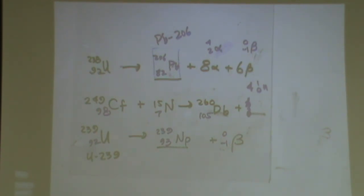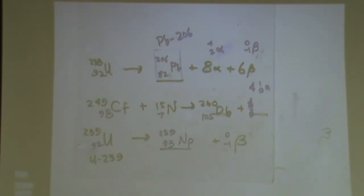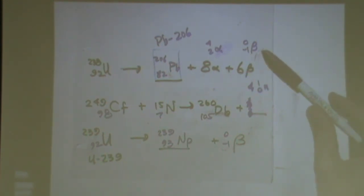I have a question. How would you get the number of protons in the first problem? 92 on the left. On the right, 2 times 8 is 16. Minus 6. That's 10 here. So 92 is 82 plus 10.